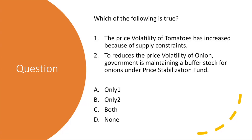Another quiz question: Which of the following is true? Statement one — the price volatility of tomatoes has increased because of supply constraints. Statement two — to reduce the price volatility of onions, the government is maintaining a buffer stock for onions under the Price Stabilization Fund. The answer is C — both are true. The price volatility of tomatoes has increased because of supply constraints, and the government is maintaining a buffer stock for onions under the Price Stabilization Fund.